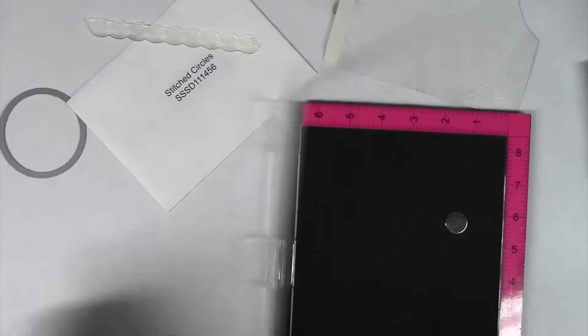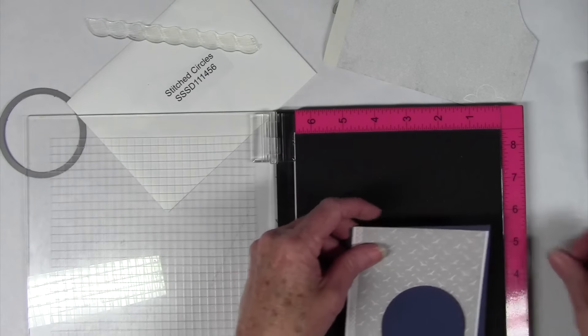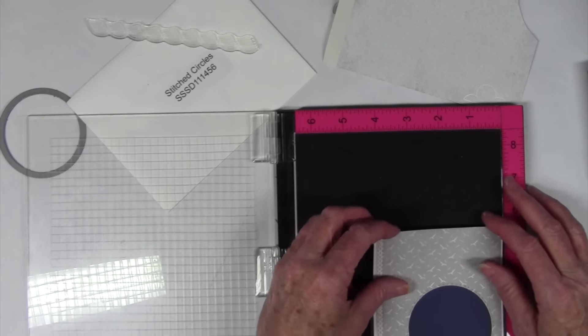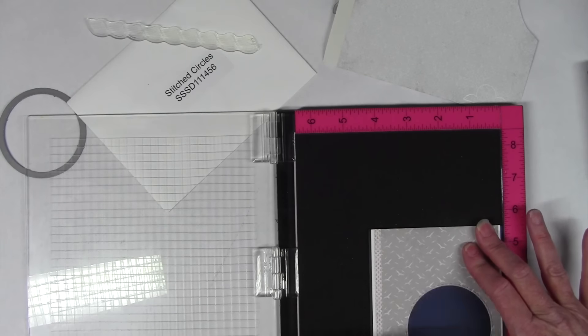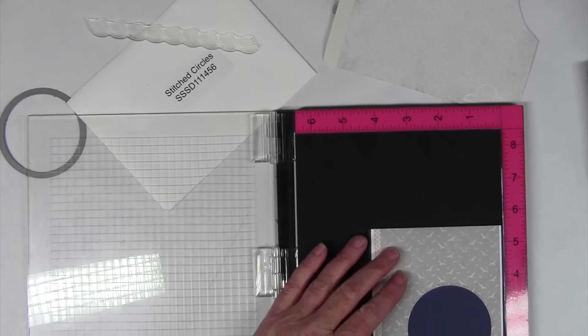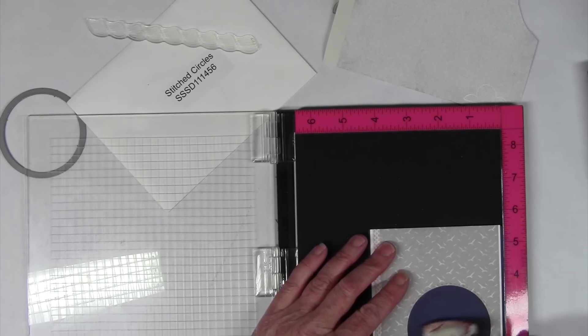I've also created a card from the navy cardstock and it's a top folding card. What I want to do is stamp into the center of that circle. So I'm using my MISTI tool here and I'm going to line everything up so that I can stamp the sail away right into that center of that circle.